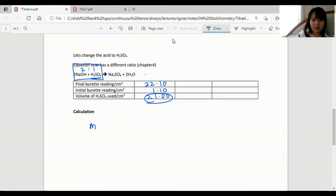So this time M acid V acid is not equal to M base V base, but the mole of base is 2 times the mole of acid.